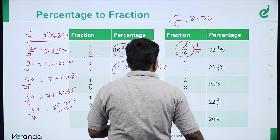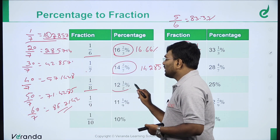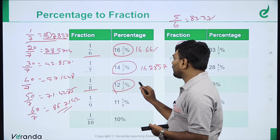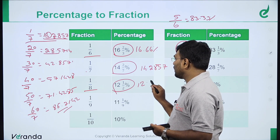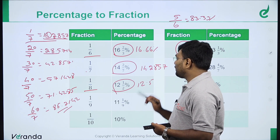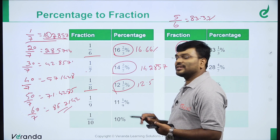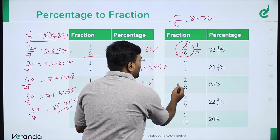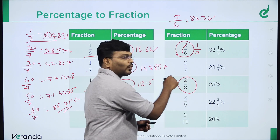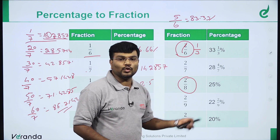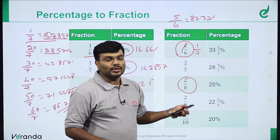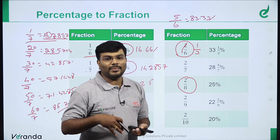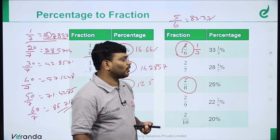1 by 8 is 12.5% or 12 and 1/2 percent. 2 by 8 simplifies to 1 by 4 — both are the same. Remember: 2 by 8 equals 1 by 4. 3 by 8 is 37.5%.